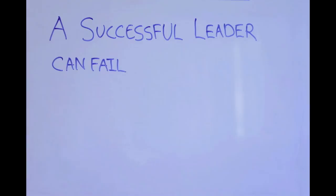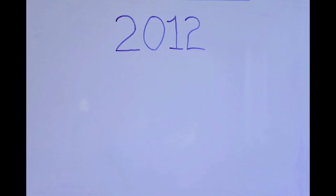According to contingency theory, a successful leader can fail when its context changes. And figures don't lie. In 2012, Nintendo reported their first ever annual operating loss of $466 million.